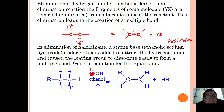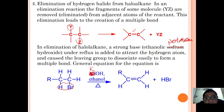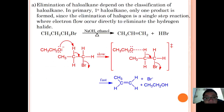The general equation: RCH2CH2Br with KOH in ethanol under reflux removes HBr to form RCH=CH2. Elimination in haloalkanes depends on the classification of the haloalkane. In primary haloalkanes, usually only one product is formed since elimination is a single-step reaction where electrons flow directly to the elimination.